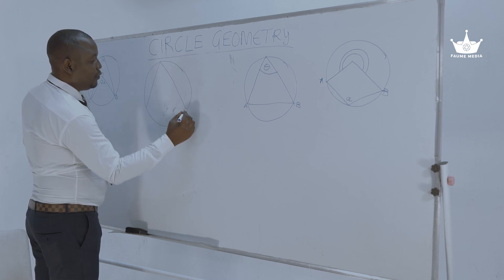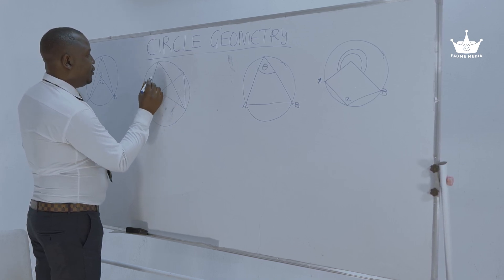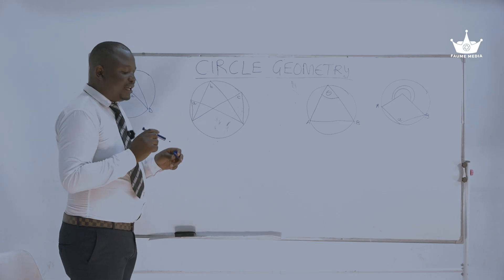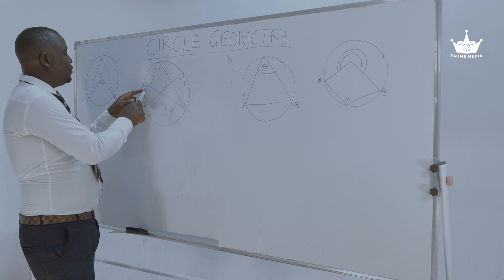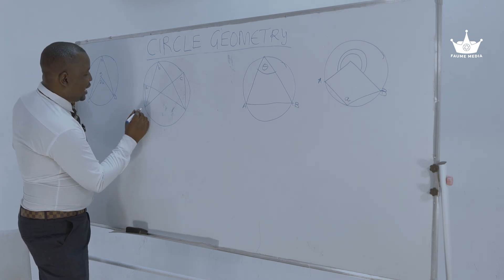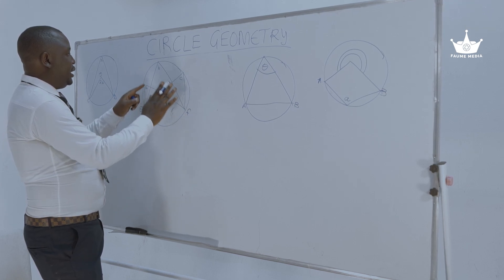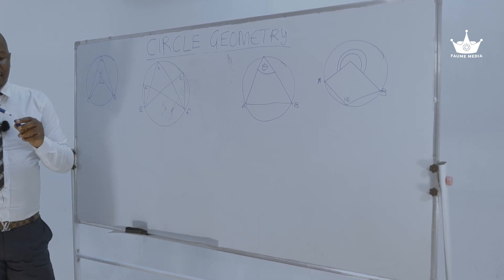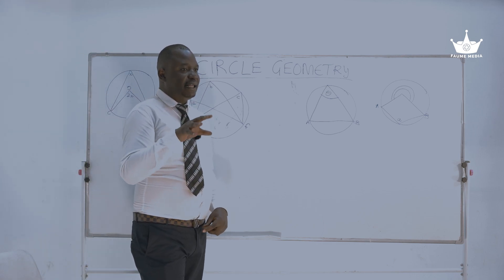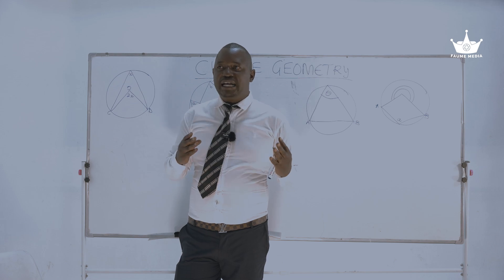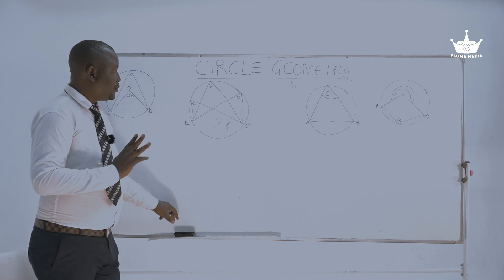Let's move on to the next theorem. I have angles A, B, and C. What you can notice is that all these angles are being subtended by the same arc — let me call this arc EF. Arc EF is subtending angles A, B, and C at the circumference. So these angles are in the same segment and they are being subtended by the same arc EF. The law reads: angles in the same segment are equal, or angles subtended by the same arc at the circumference are equal.